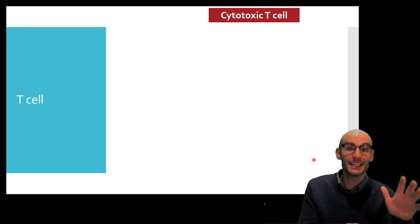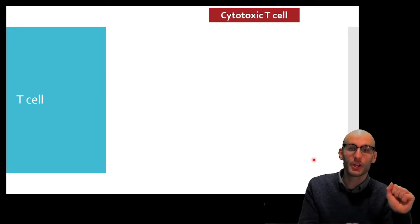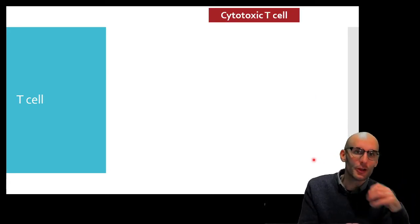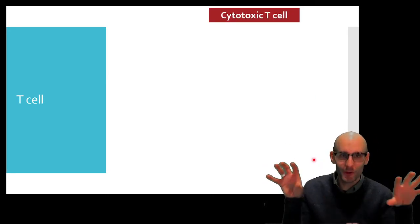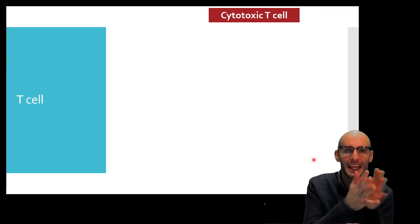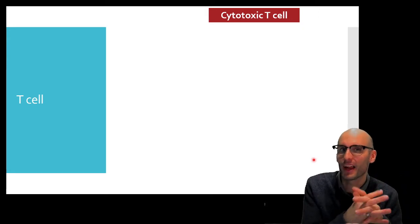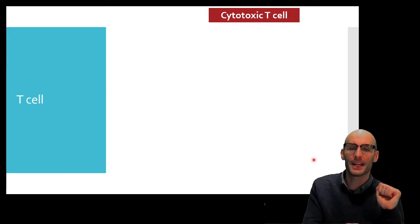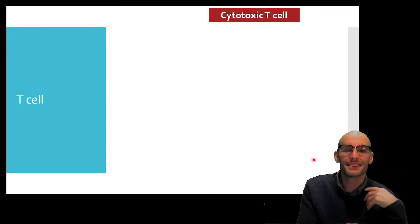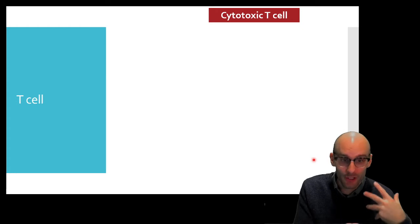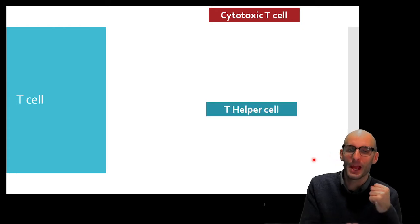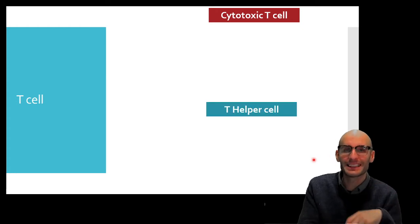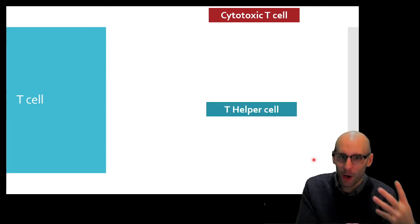Now let's have a look at the T cell. There are actually two major groups of T cells. They can also be subdivided again, but we'll just look at those two major groups. One is the cytotoxic T cell, and the other one is the T helper cell.